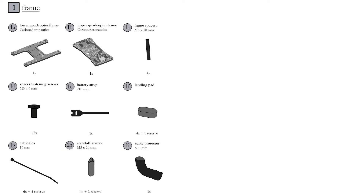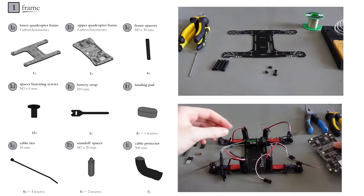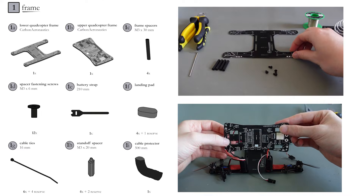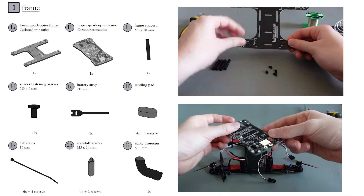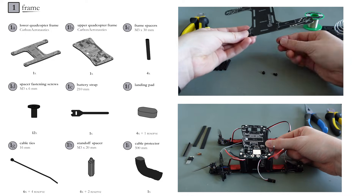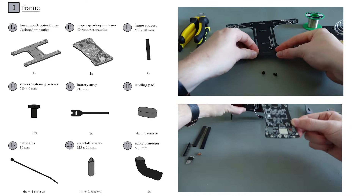Let's start with the 9 components necessary for the frame. All components are available commercially online on Amazon, AliExpress, or Banggood, except for the lower and upper quadcopter frame. Both frames are tailor-made for this project and are actually just printed circuit boards. PCB material is a perfect match for small quadcopter drones — it is light and sufficiently flexible, meaning it will bend but not break when you crash your drone.